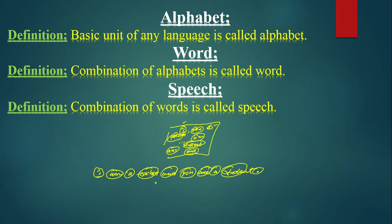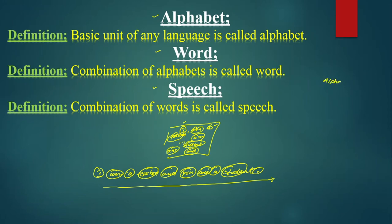So this is all about construction. We started from alphabet, then went towards word, then speech. I taught you these three definitions because next we are going to discuss Parts of Speech. In syntax, our journey goes: alphabet, then word, then speech, and we are learning Parts of Speech — so we are at the center of our topic.